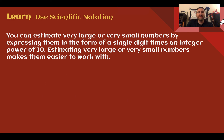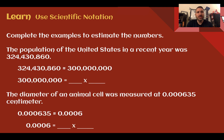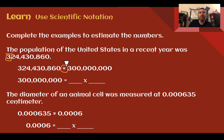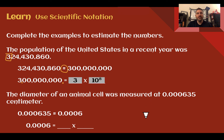You can estimate very large or very small numbers by expressing them as a single digit times an integer power of 10, which makes them easier to work with. For example, the population of the United States in a recent year was 324,430,860 — we can estimate that by rounding to the first number: about 300 million, which equals 3 times 10 to the 8th. For the diameter of an animal cell measured at 0.000635, we round to just the 6, which is easier to express as 6 times 10 to the negative fourth.